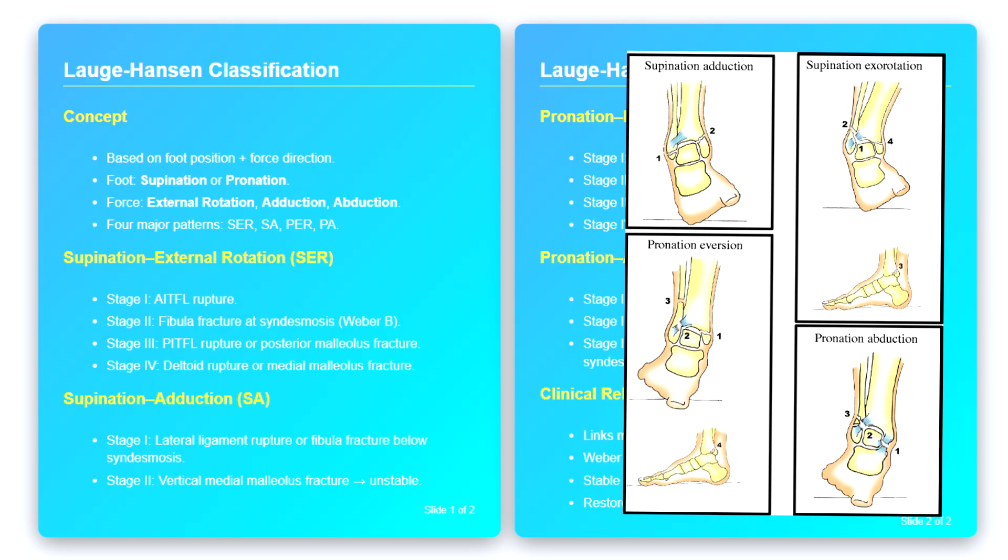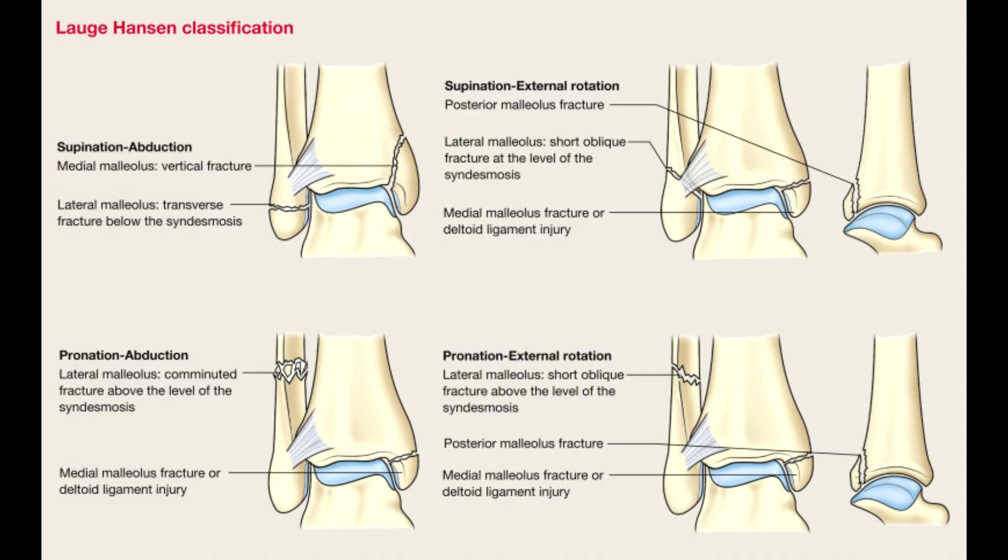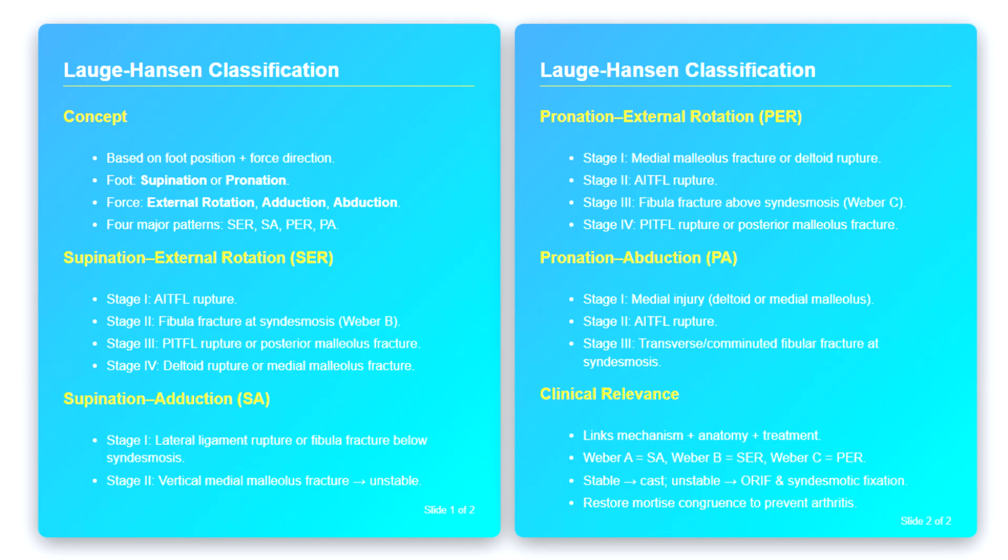By combining these two variables, we obtain four major categories of ankle fractures: Supination external rotation (SER), Supination adduction (SA), Pronation external rotation (PER), and Pronation abduction (PA). Each mechanism produces a characteristic pattern of injury, progressing through predictable stages. The radiographic findings we see are therefore not random, but rather logical results of the sequence of ligamentous ruptures and bone fractures caused by these forces.